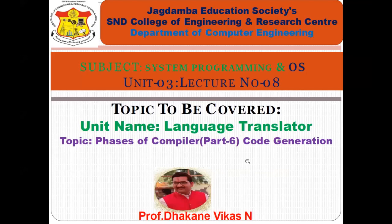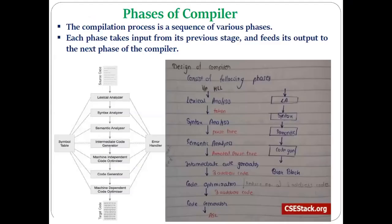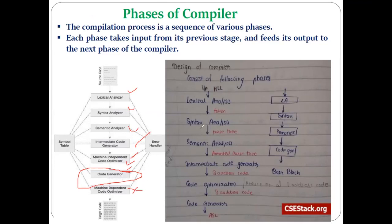Today we will discuss the sixth and last phase of compiler, that is code generation. Before this, we have already studied phases like lexical analysis, syntax analysis, semantic analysis, intermediate code generation, and code optimization. Code optimization is not mandatory to discuss again, so we will focus on code generation as the last phase of compiler.